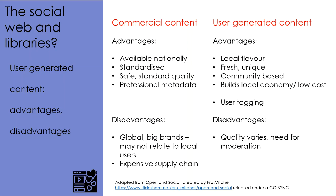When you have something that's been professionally produced and the library is the end point on the supply chain, the item may well be quite expensive because you've had to go through the entire process of purchasing, editing, formatting, creating, printing, publishing, and selling the content. All of these things add to the cost of the actual item, so you end up with a very expensive supply chain and therefore the library can afford to buy fewer things, because the more expensive the individual item, the less their budget will extend to buying.